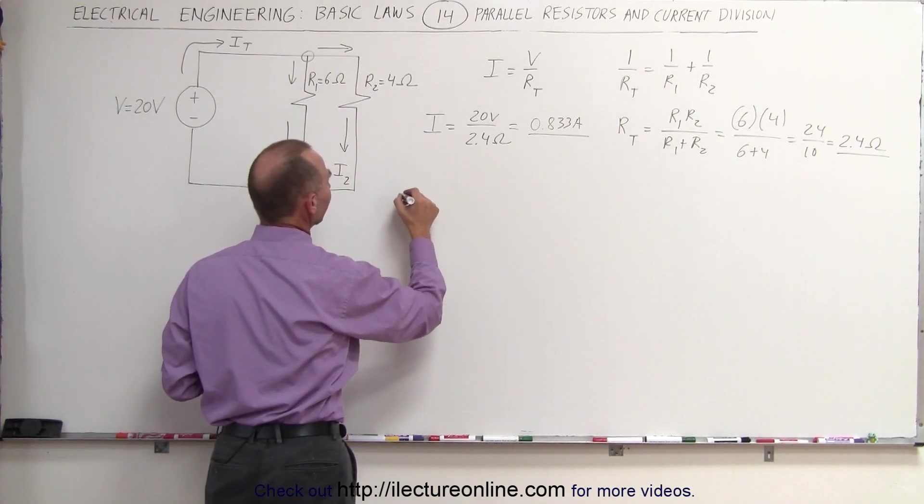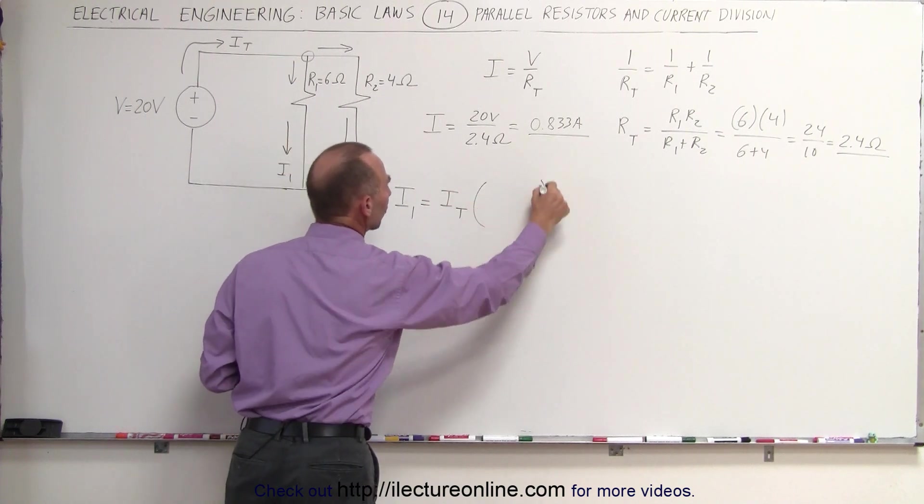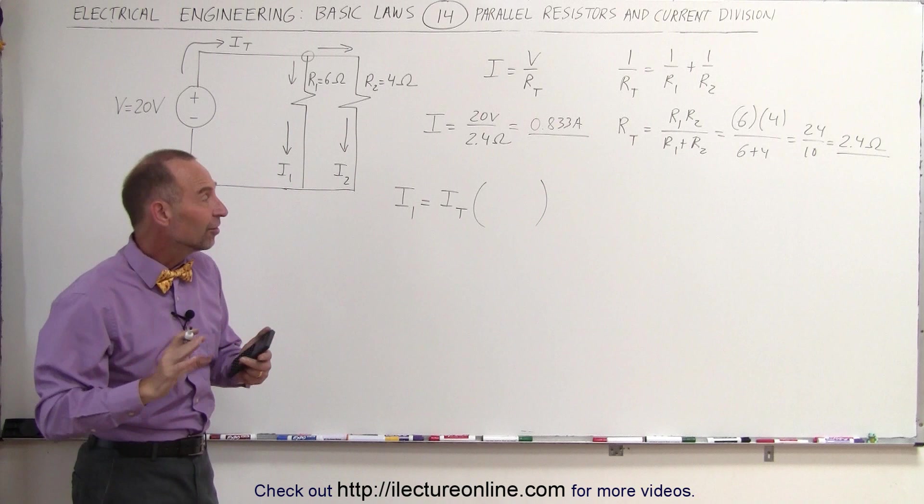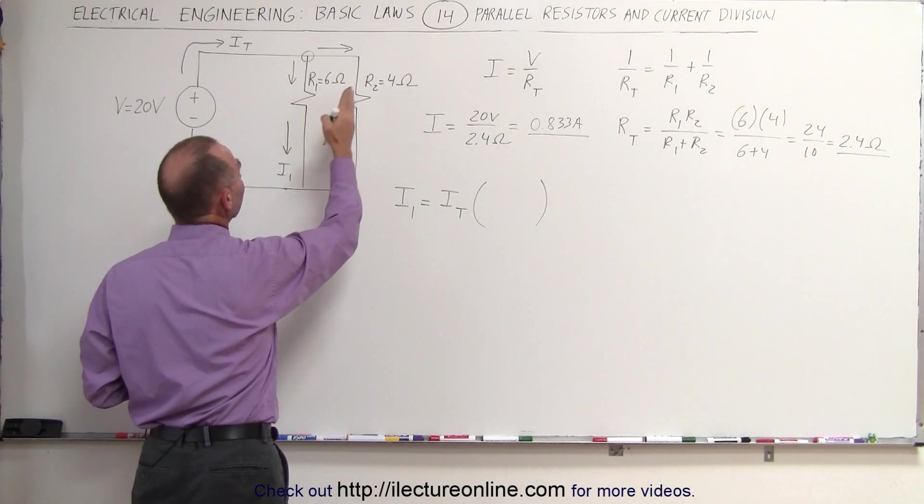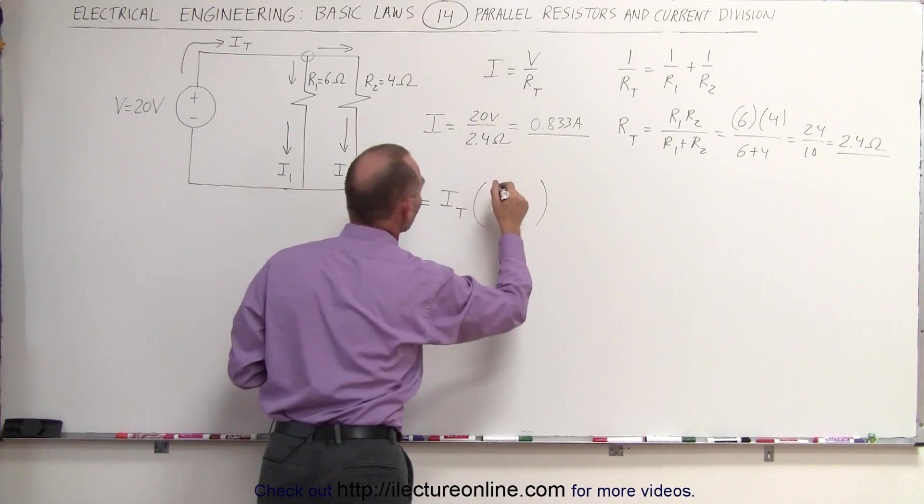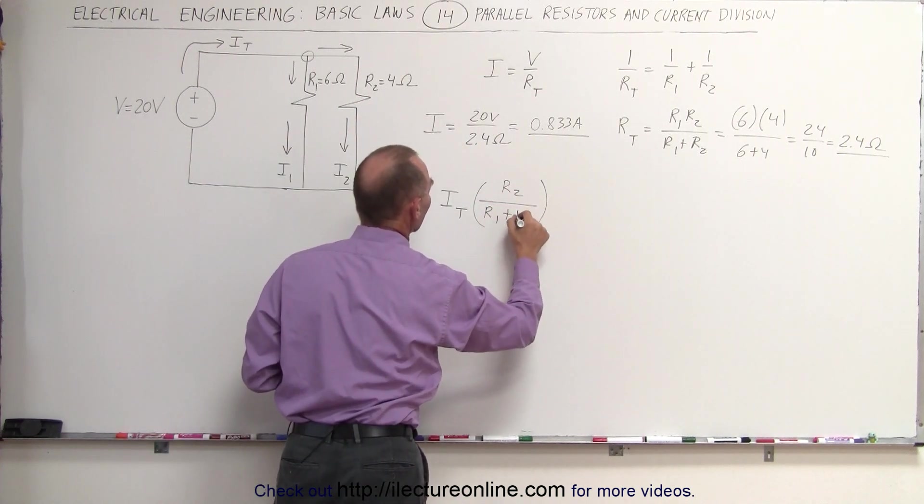What we can say is that the current in the first branch, I1, is equal to the total current times the ratio of the resistance in the other branch. Notice we're trying to find the current in I1, so we take the resistance in the other branch, R2, and divide it by the sum of the two resistors.